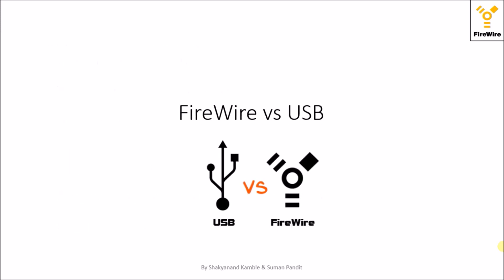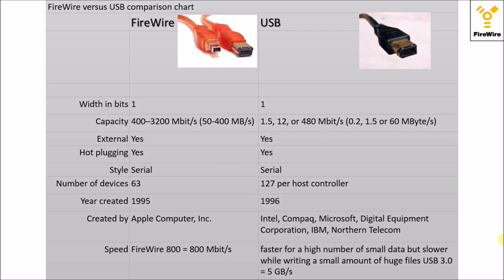Now we will see the difference between FireWire and USB. In terms of width, both are of one width. The capacity of FireWire is 50 to 400 MB per second, and for USB it is 0.2, 1.5, or 60 MB per second, depending upon the type of USB used. Both are externally used devices, both support hot-plugging, and both are serial-style interfaces.